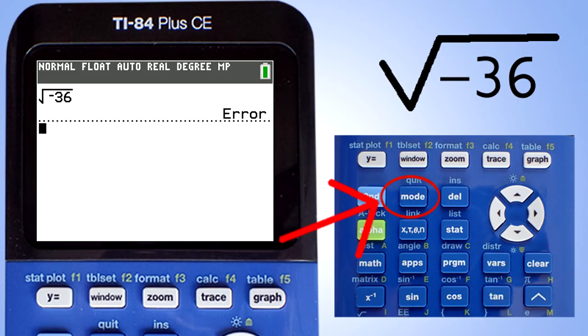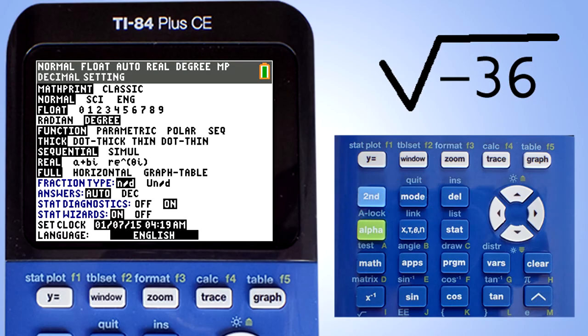Press the mode key here. This screen appears. Go down here and highlight this A plus B I. Use the arrow keys to go down and to the right. Highlight it in black and then press the enter key. Now we are ready to go back to the problem. Press the clear key.